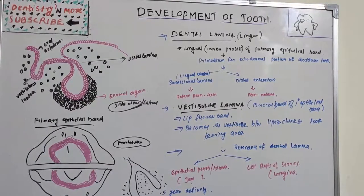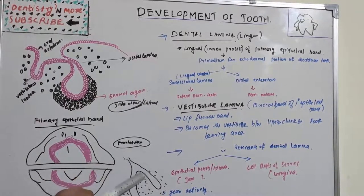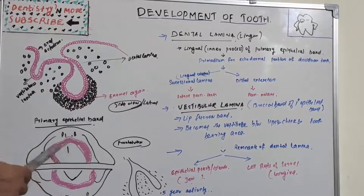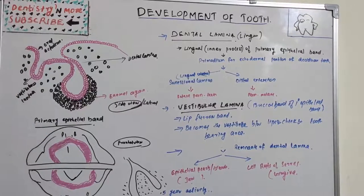Now we will look into the various stages of tooth formation. Before that, understand these key concepts clearly: what is vestibular lamina, what is dental lamina, what is lip furrow band, what are epithelial pearls, and what are cell rests of Serres — everything is very important. There will be formation of a tooth bud from the dental lamina, so now let's see the various tooth formation stages.